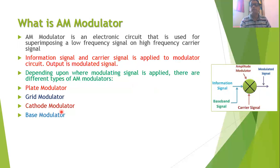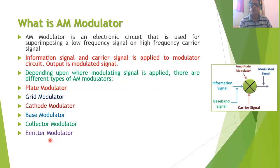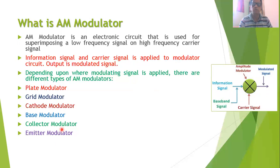Instead of a vacuum tube, it is possible to use a transistor in the modulator circuit. If you apply the modulating signal to the base of the transistor, it is called a base modulator. If you apply it to the collector terminal, it is called a collector modulator. If applied to the emitter terminal, it is called an emitter modulator. We will be discussing the collector modulator in detail as required by our course.